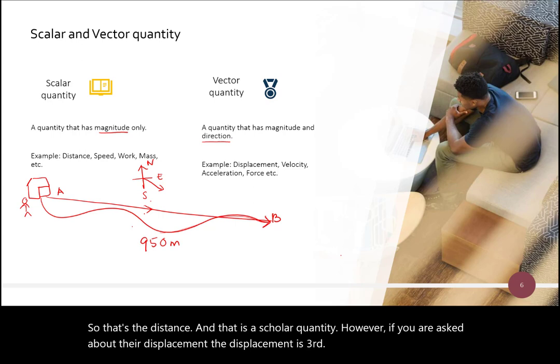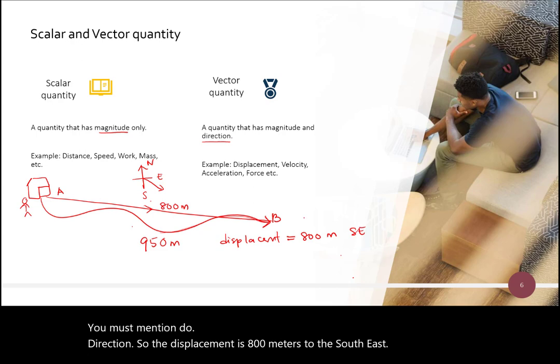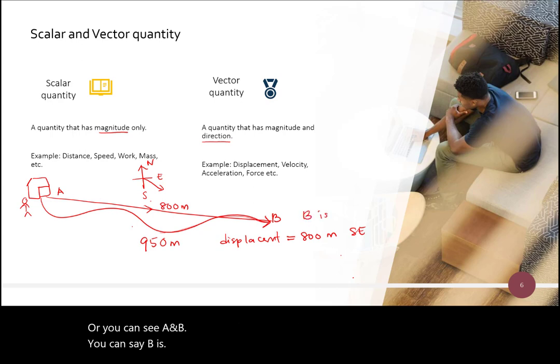However, if you are asked about the displacement, the displacement is this distance. Let's say, 800 meters. And you must mention the direction. So, the displacement is 800 meters to the south-east. Or, you can say, A and B. You can say, B is 800 meters south-east of A. So, that's how we say. So, that's vector quantity.